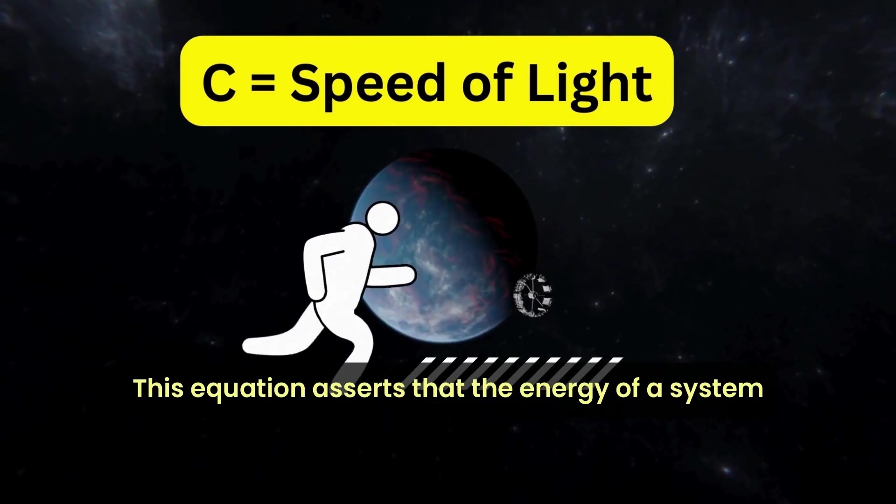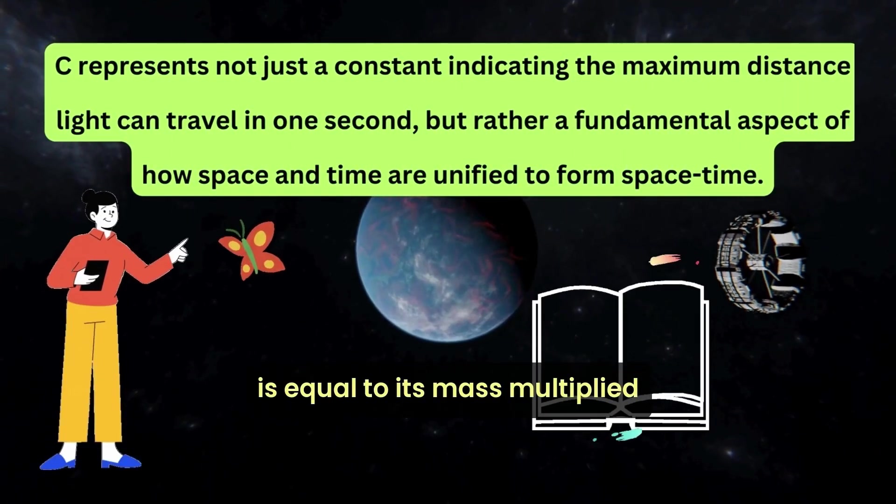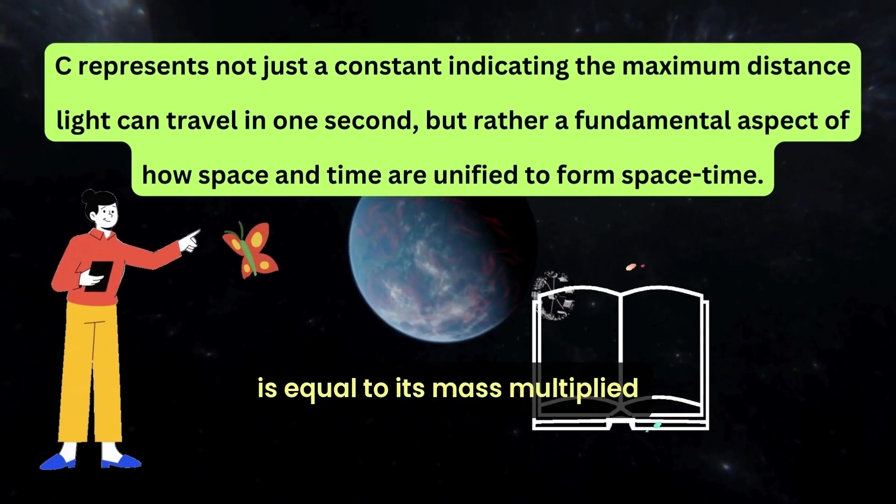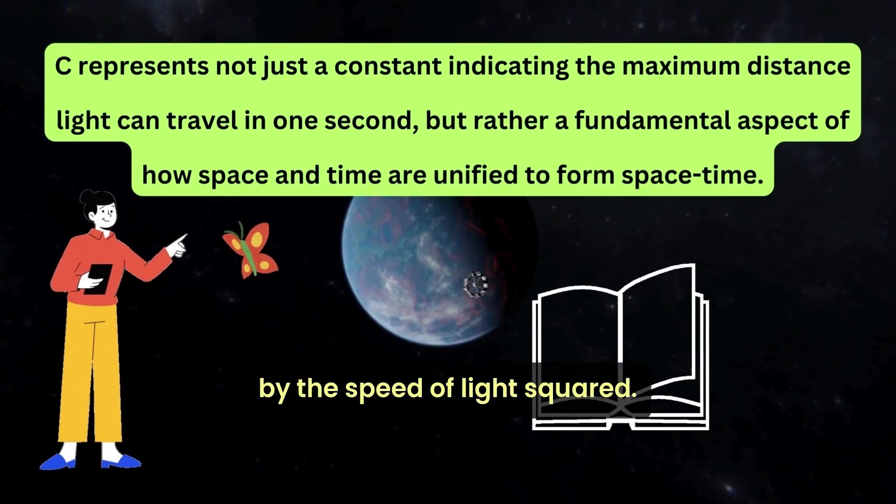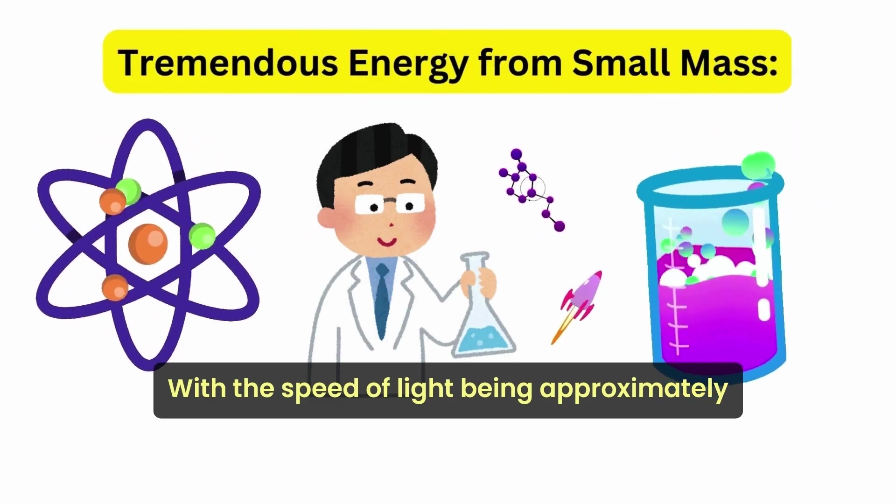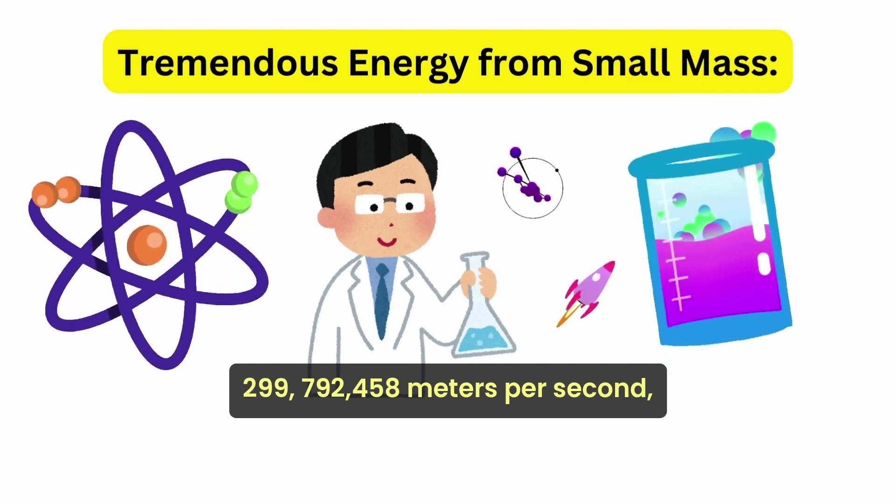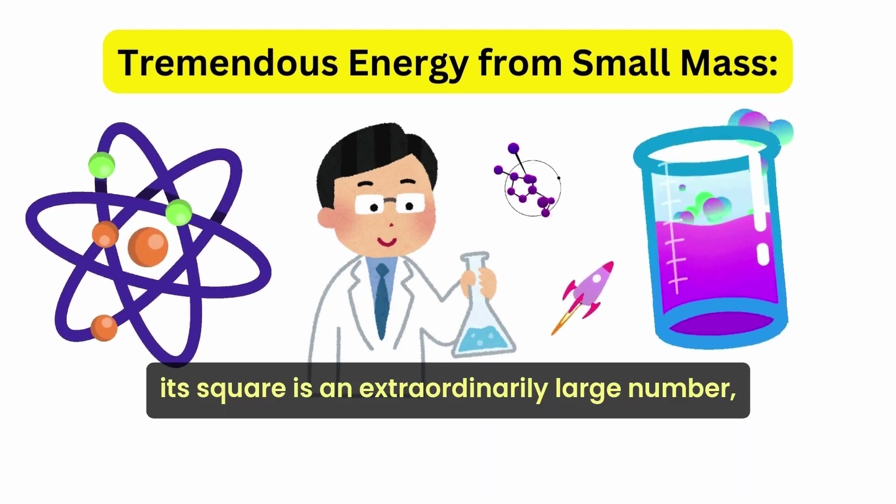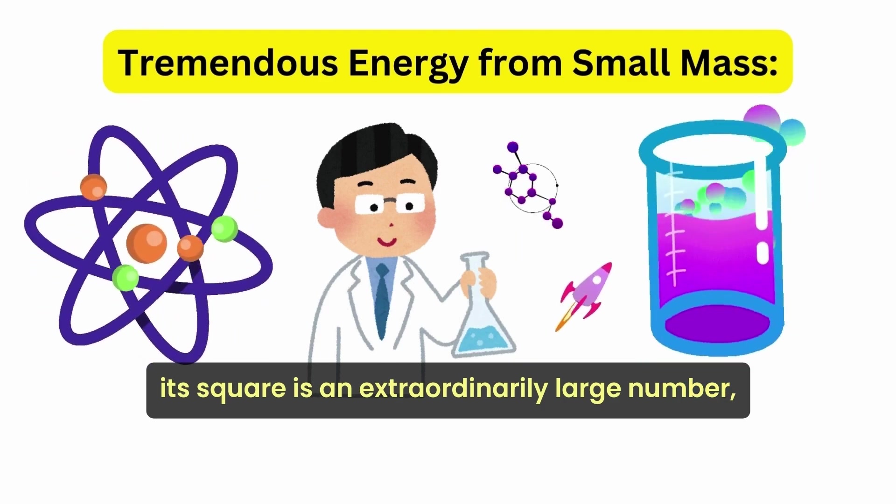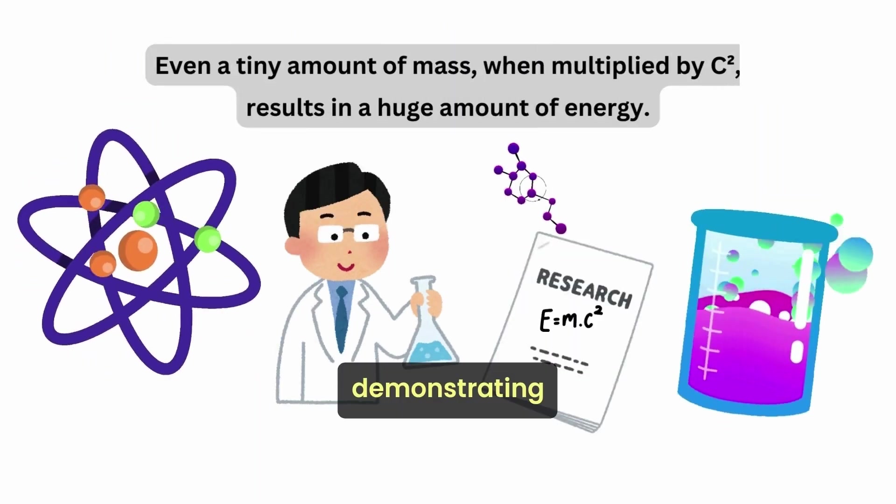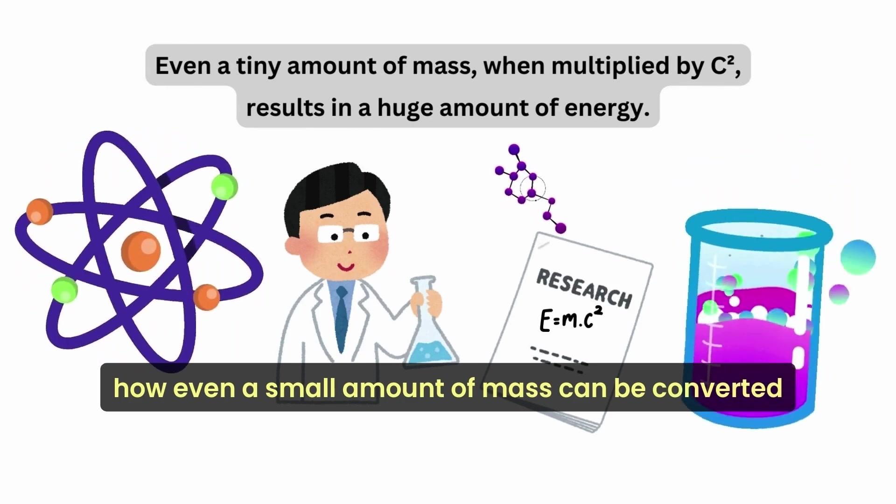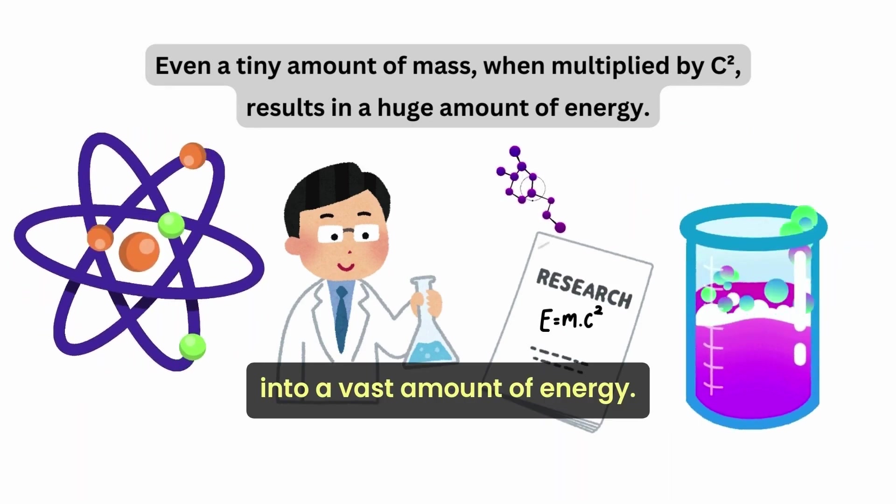This equation asserts that the energy of a system is equal to its mass multiplied by the speed of light squared. With the speed of light being approximately 299,792,458 meters per second, its square is an extraordinarily large number, demonstrating how even a small amount of mass can be converted into a vast amount of energy.